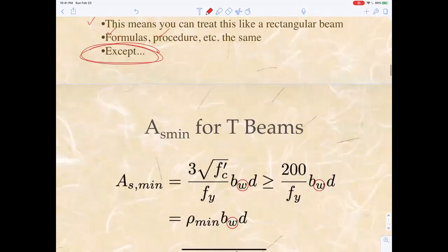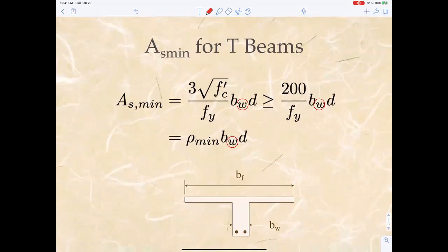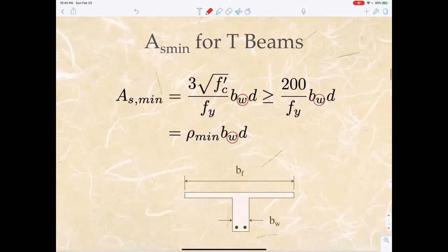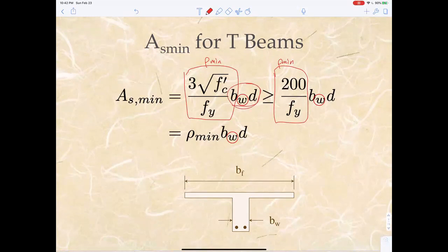The exception is that AS-min - remember AS-min has to do with the nominal moment having to be greater than the cracking moment. So the cracking is happening down for positive moments, happening down in the web. And so AS-min, the area of steel minimum, we were calling this rho-min. The greater of these two are rho-min, but the area that you multiply it, B times D, is B of the web.